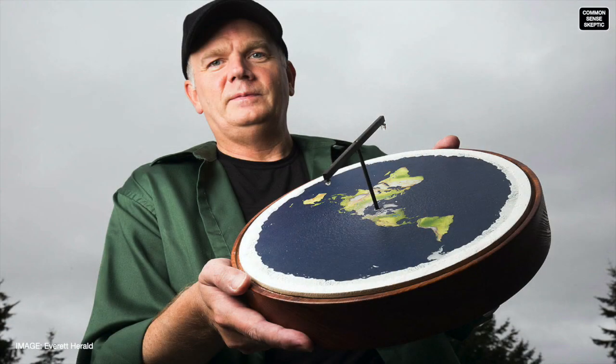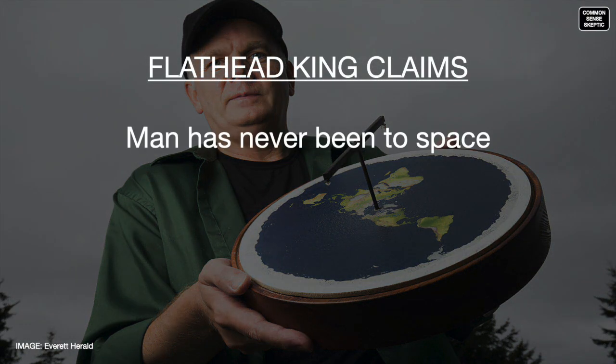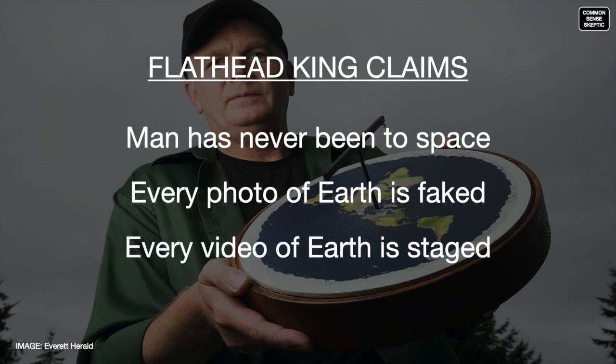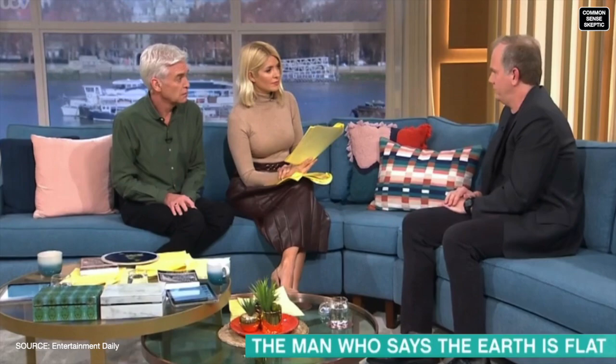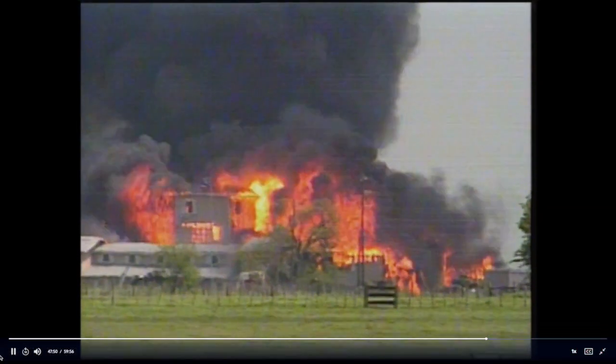This same guy, Mark Sargent, denies man has ever been to space. He says every photo taken from orbit is photoshopped, that every video depicting a round globe is staged. And at least when the cameras are rolling, he keeps swearing by these beliefs like a devout Branch Davidian.